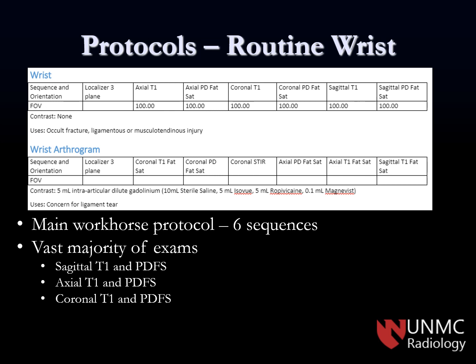These are the protocols — just two basic ones to know for the wrist: the routine wrist protocol and the wrist arthrogram protocol. Wrist arthrograms don't happen too often, but they do happen once in a while. The workhorse protocol will be the routine wrist without contrast protocol, which is basically three planes, T1 and PD fat sat — a pretty basic protocol, not too hard to remember. This will be used for occult fractures, ligamentous or muscular-tendinous injury — basically all the routine pathology of the wrist.